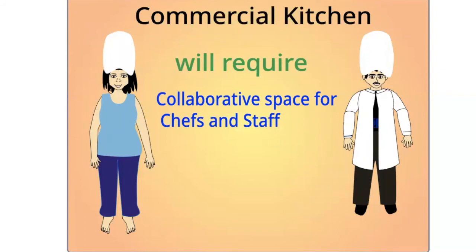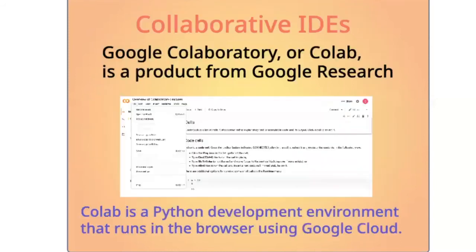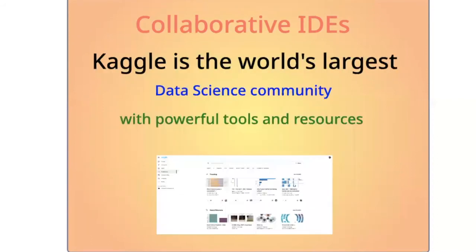Let us continue with the example of the kitchen. If we were talking about a commercial kitchen rather than a home kitchen, the design would enable much more collaborative working. Many online cloud-based development environments are taking the direction of collaborative work across different areas — for instance, Google Colab for Python, one of the most popular platforms for data scientists is Kaggle, and of course MIT Scratch for visual coding.